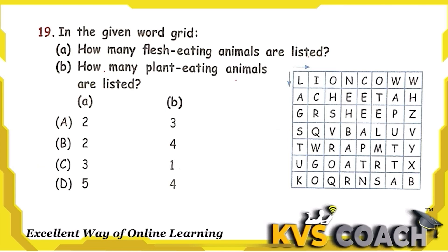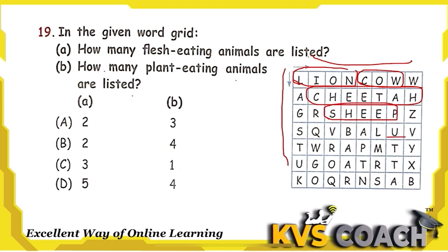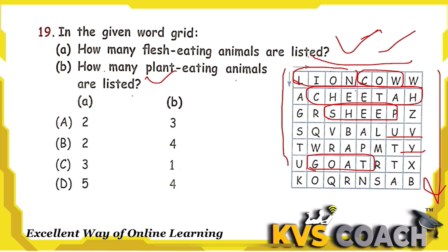Question 18: In the given grid, how many flesh-eating and plant-eating animals are listed? Animals found: lion, cow, cheetah, sheep, and goat. Lion is a flesh eater, cheetah is a flesh eater — that is 2. Cow, sheep, and goat are plant eaters — that is 3. So A equals 2 and B equals 3 — option A is the right answer.